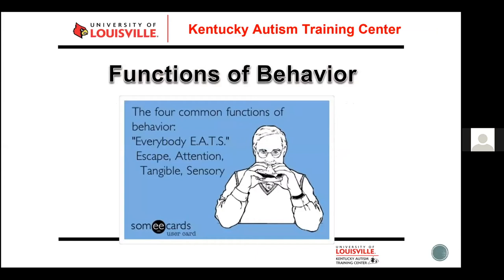Why do we need ABC data? Because it helps us identify the function of the behavior — what's the function? The four most common functions are: Escape, Attention, Tangible, and Sensory. I also add Medical, so I use the mnemonic 'everybody eats meat.' We'll talk about what each of these means.